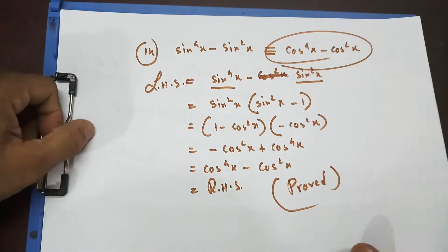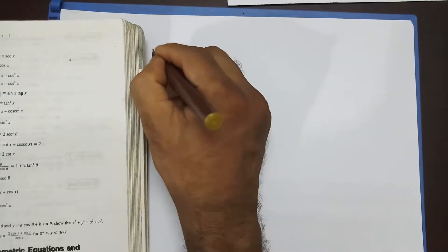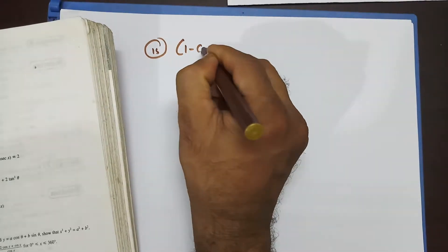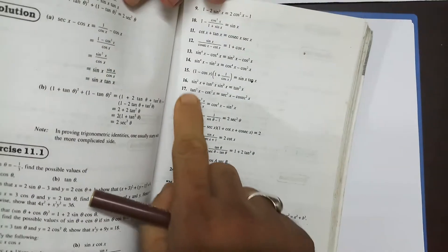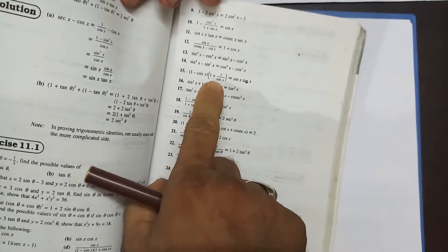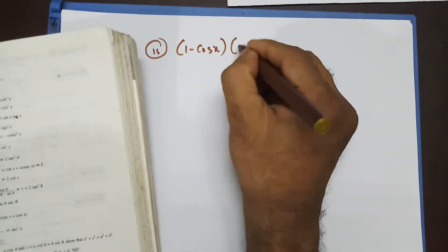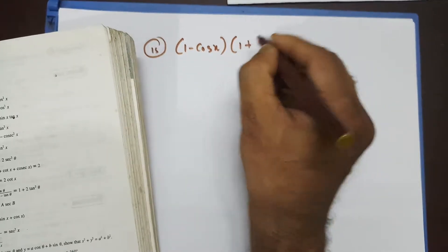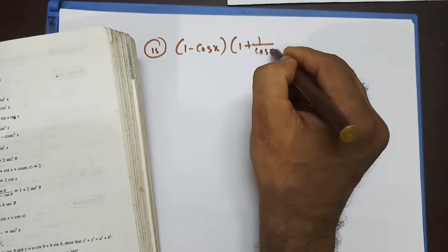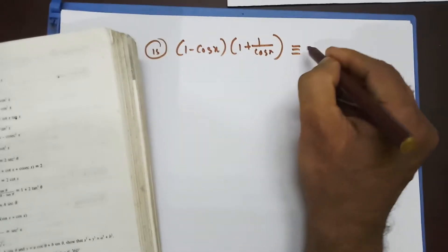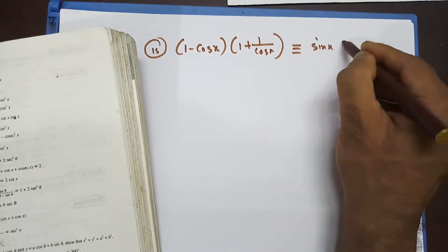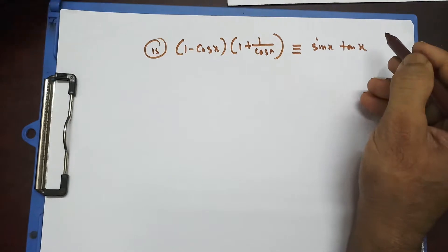So questions 13 and 14 are done. Let's do question number 15. Question 15 says: (1 minus cosx)(1 plus 1/cosx) is identical to sinx times tanx.